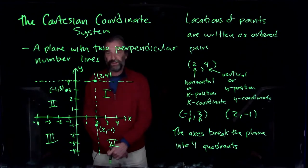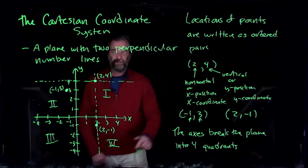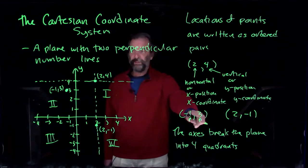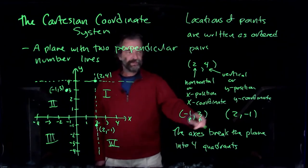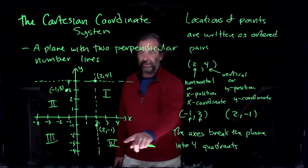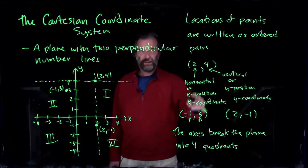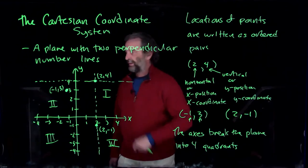So sometimes you could say, let's see, the point minus one, three lies in the second quadrant. The point two, minus one lies in the fourth quadrant. And two, four lies in the first quadrant.